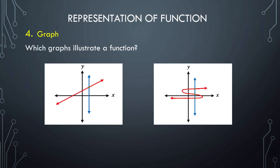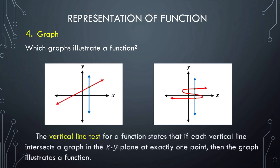To determine whether a graph illustrates a function, we use the vertical line test. The vertical line test states that if each vertical line intersects a graph in the XY plane at exactly one point, then the graph illustrates a function. For the first graph, a vertical line intersects it at exactly one point — hence it is a function. For the next graph, drawing a vertical line intersects it at two or three points — therefore, it is not a function.